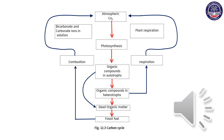This is the second diagram of figure 12.3, the carbon cycle. This is the atmospheric carbon dioxide. Photosynthesis — this is the third diagram. The first diagram is called carbonic and carbonic ions in solution, which are carbonic ions in the carbon system.